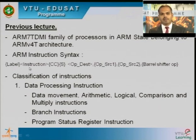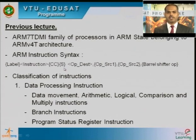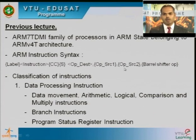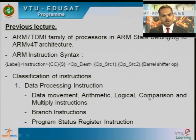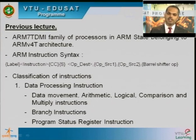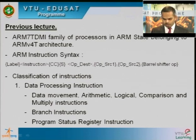The general ARM instruction syntax has a label followed by instruction, CC for condition, S that updates the SPSR, opcode, destination operand, source operand 1, source operand 2, and barrel shifter operations. The classification of instructions includes data processing instructions — data movement, arithmetic, logical, comparison, and multiplication — as well as branch instructions and program status register instructions, all of which were studied in the previous lecture.